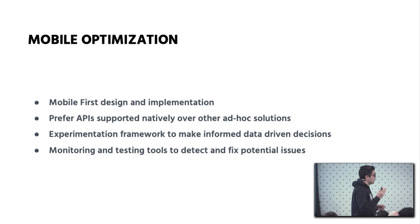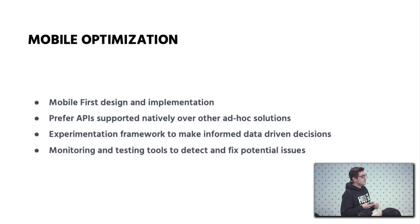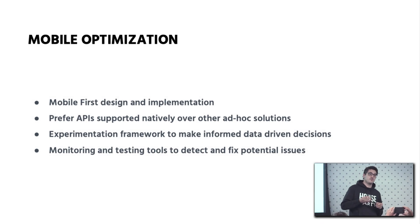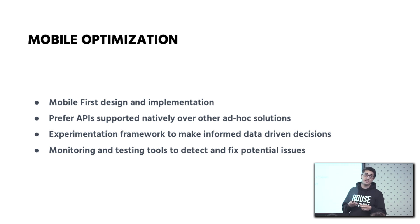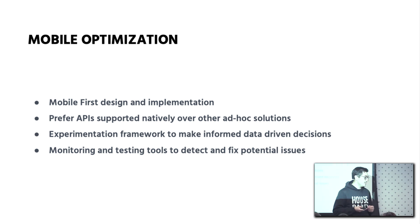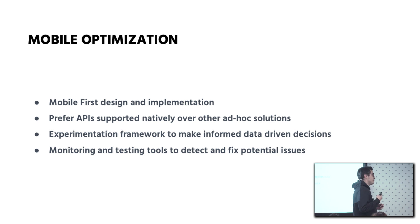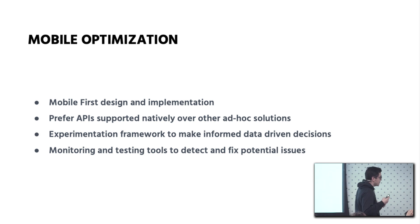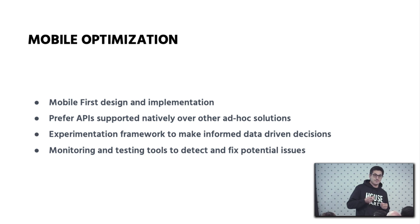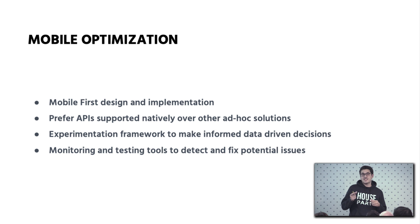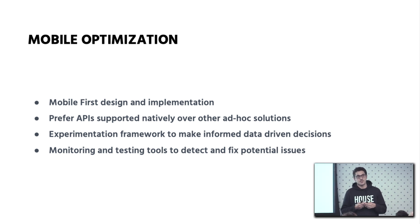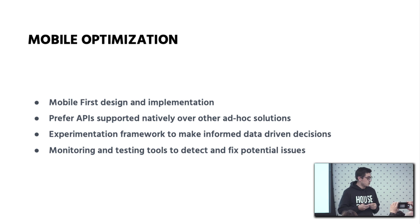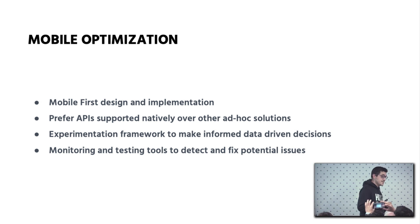Our high-level approach or strategy for mobile optimization is around these four ideas. The first one is that everything we implement, every new idea, we try to design and implement it from a mobile-first mindset, because there are many small improvements that can have a big impact on the experience that your mobile users get. The second strategy is to always prefer native APIs.